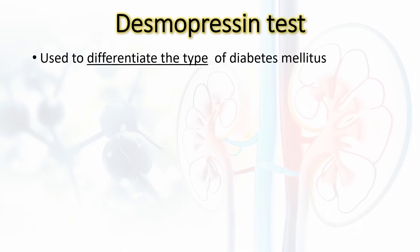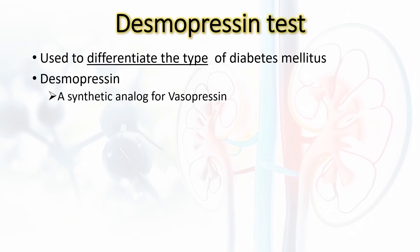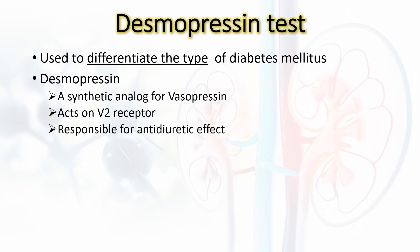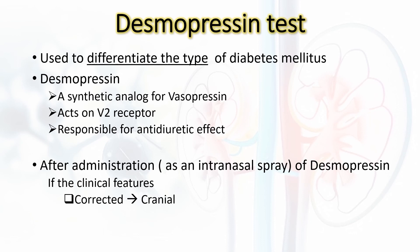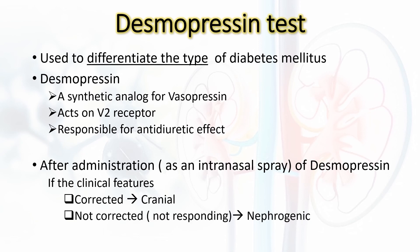To do this, we perform the desmopressin test. We administer desmopressin as an intranasal spray to the patient. Desmopressin is a synthetic analog of vasopressin which also acts on V2 receptors in the collecting ducts to produce an antidiuretic effect. After administration, if the clinical features are corrected, there is a problem with the production of vasopressin — this is the cranial type.